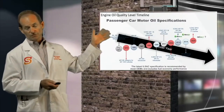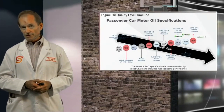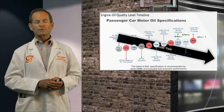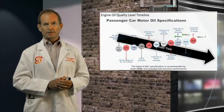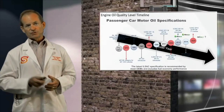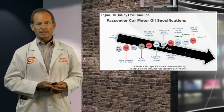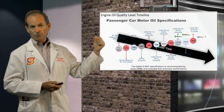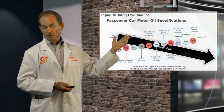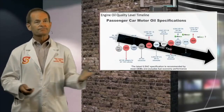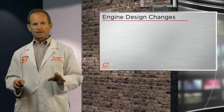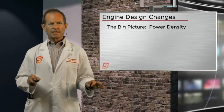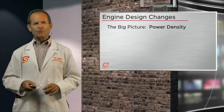Along the timeline you can see the years designated. It was about 1992 when ILSAC got involved, starting with their specification GF1, which grew to GF2, GF3, and on to now GF6 — really wrapped around one big concept: power density.